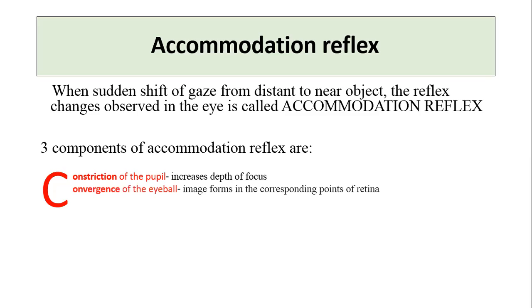The second C is convergence of the eyes, where the image forms on corresponding points on the retina, and this occurs by contraction of the medial recti muscles of the eyeball. The third change is an increase in the curvature of the lens, which increases the power of the lens — the lens becomes more convex — and this occurs by contraction of the ciliary muscles.